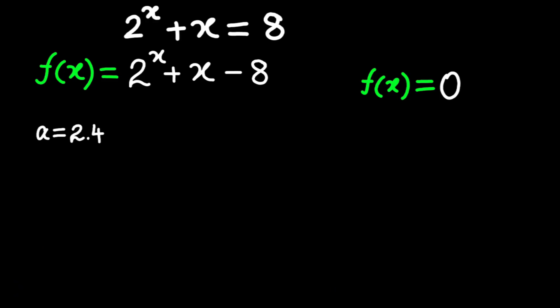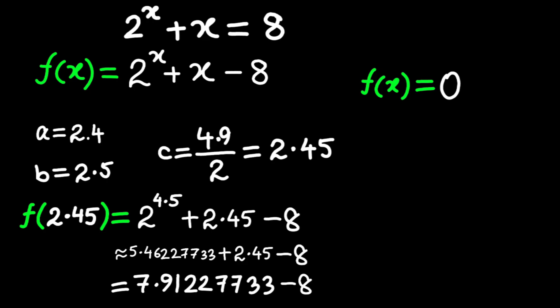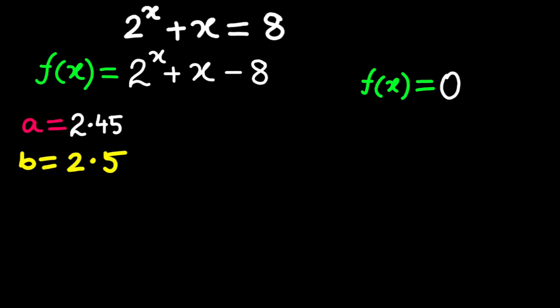Let's do it. Start with a equals 2.4, b equals 2.5. The midpoint is 4.9 divided by 2 equals 2.45. Compute f of 2.45. 2 to the power 2.45 is approximately 5.46227733. Add 2.45, which is about 7.9122733. Subtract 8, so f of 2.45 is approximately negative 0.0857226614. Negative, so the root is to the right of 2.45. New interval, 2.45 to 2.475.